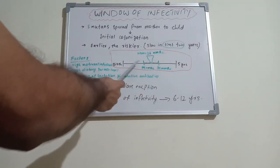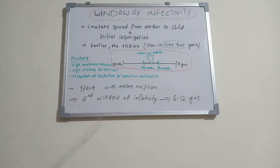If the window of infectivity is earlier, the child has more risk for caries to develop and progression of caries. So window of infectivity is to be taken care of well, otherwise there will be lots of caries in future.